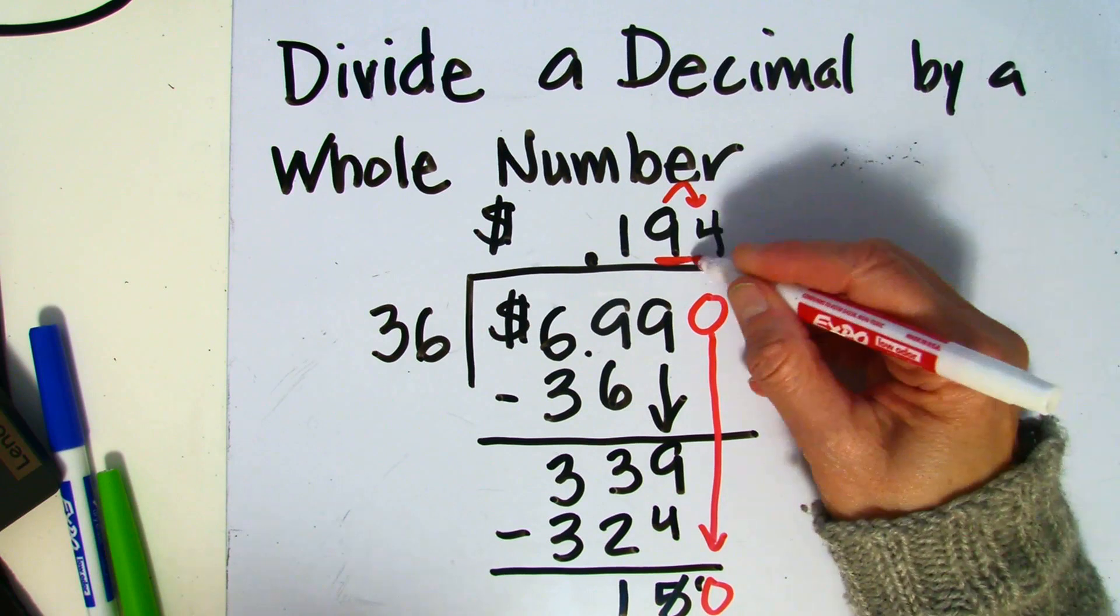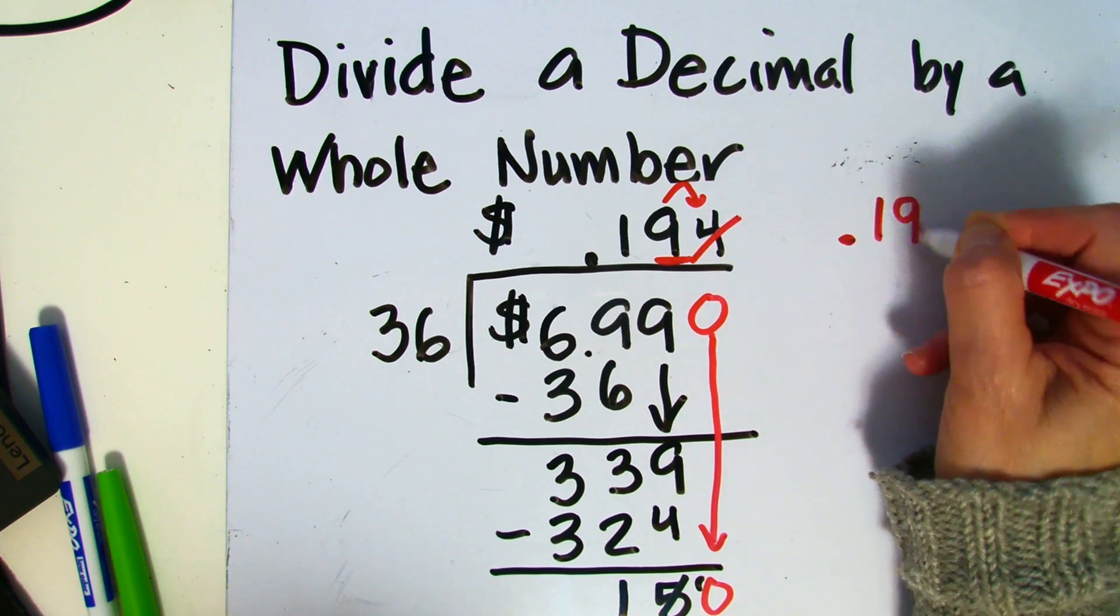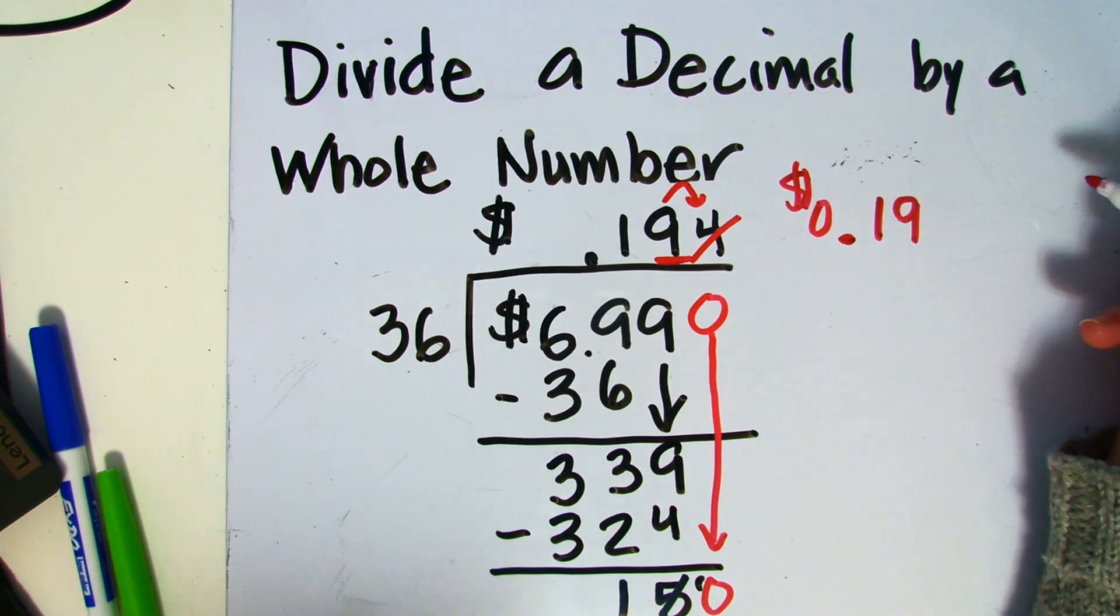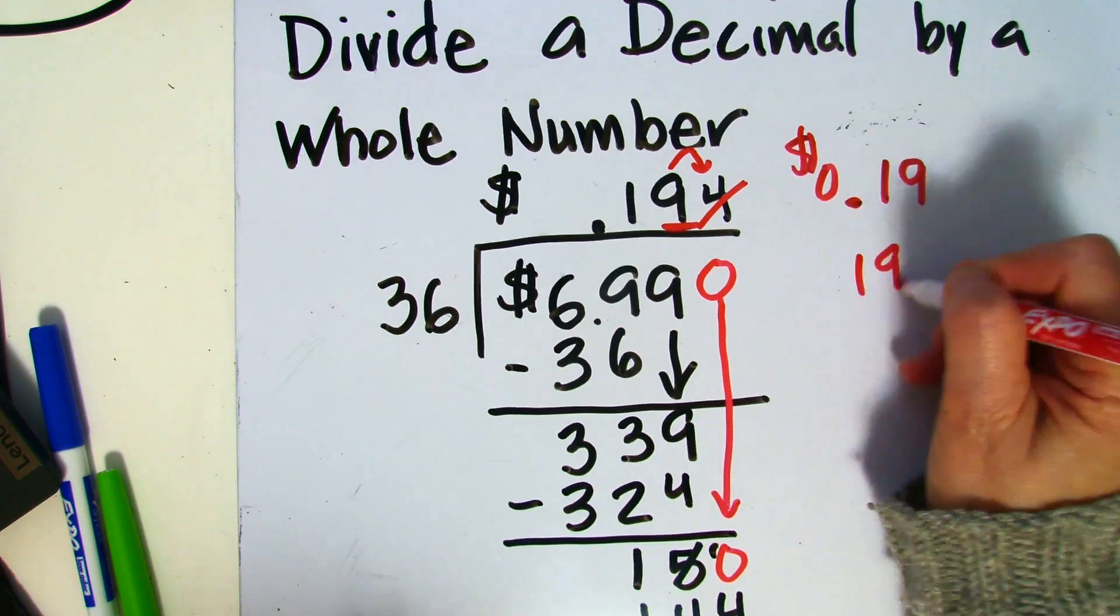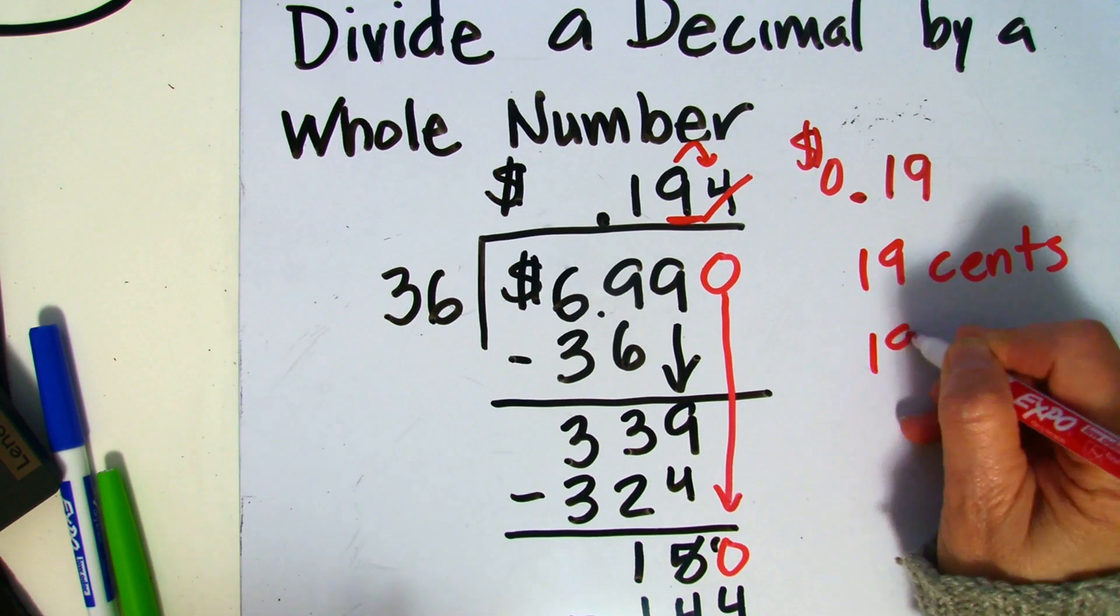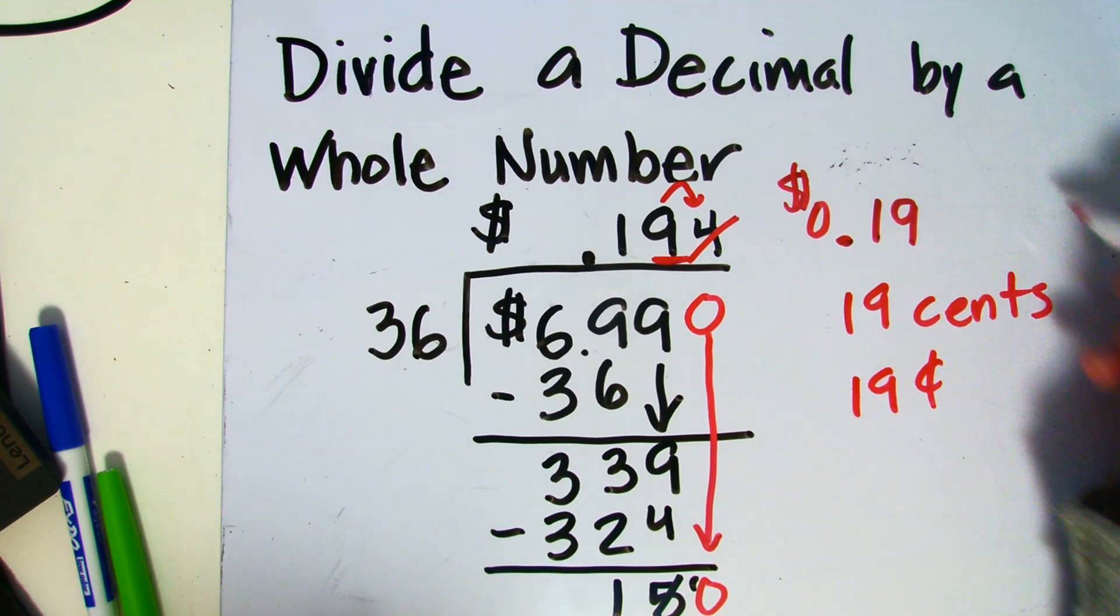And so that means I'm going to drop this 4, and I'm left with 19 cents. Now I could put a 0 here as a placeholder, or I could write it as 19 cents or that symbol there. All of these are going to refer to the same amount.